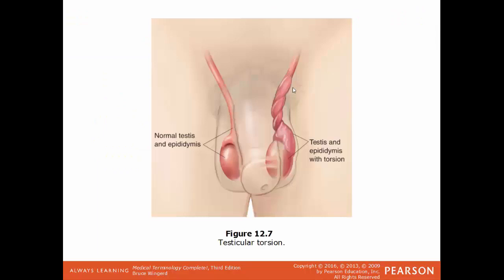In this illustration, we have an example of testicular torsion. This is how the structures should look: the penis here, testes here, the epididymis lies right on top of the testes, and the extension of the epididymis here. But when that gets twisted around, that's what's called testicular torsion. The more this tube twists, the more restriction of blood flow there will be to the testes, to the scrotum, and the other surrounding tissues.